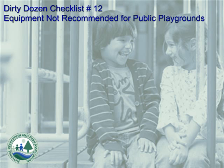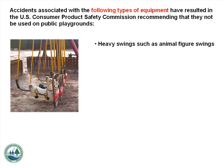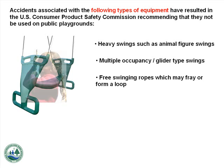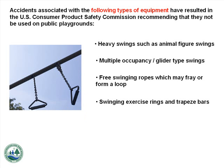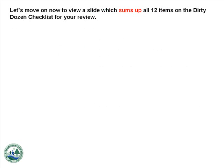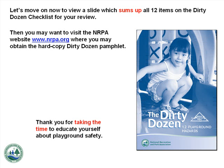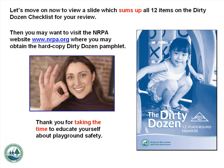Number 12: Equipment Not Recommended for Public Playgrounds. Accidents associated with the following types of equipment have resulted in the U.S. Consumer Product Safety Commission recommending they not be used on public playgrounds: heavy swings such as animal figure swings, multiple occupancy or glider type swings, free swinging ropes which may fray or form a loop, and swinging exercise rings and trapeze bars. However, overhead hanging rings with a short chain of 7 inches are allowed on public playground equipment. Visit the NRPA website at www.nrpa.org to obtain the hard copy Dirty Dozen pamphlet. Thank you for taking the time to educate yourself about playground safety.